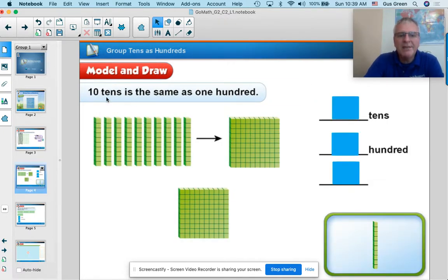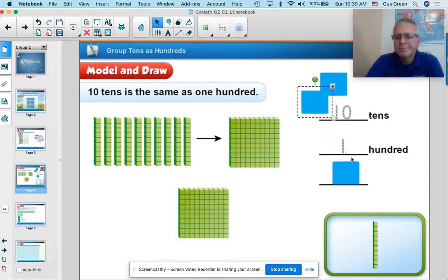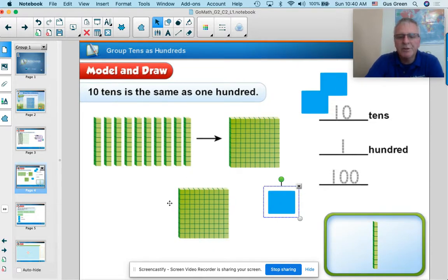After that, we're going to talk about how 10 tens is the same as 100. So these 10 tens, if I counted them by tens, 10, 20, 30, 40, 50, 60, 70, 80, 90, 100, are the same as 100. So to reveal these, 10 tens is the same as 1, 100. And the way we write that is 100, no tens, no ones, which is what you see right here in the middle of the screen.